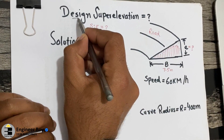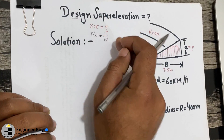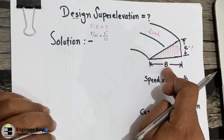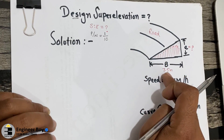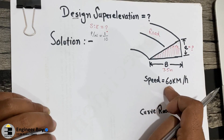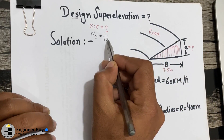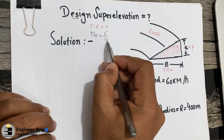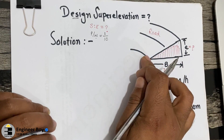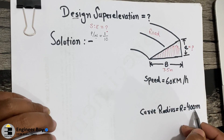In this video, we'll be determining the design super elevation from the given data for the given road. The road is 7.5 meters wide, the vehicle speed is 60 km per hour, the centrifugal ratio given is 1 over 10, and the radius of the curve is 400 meters.